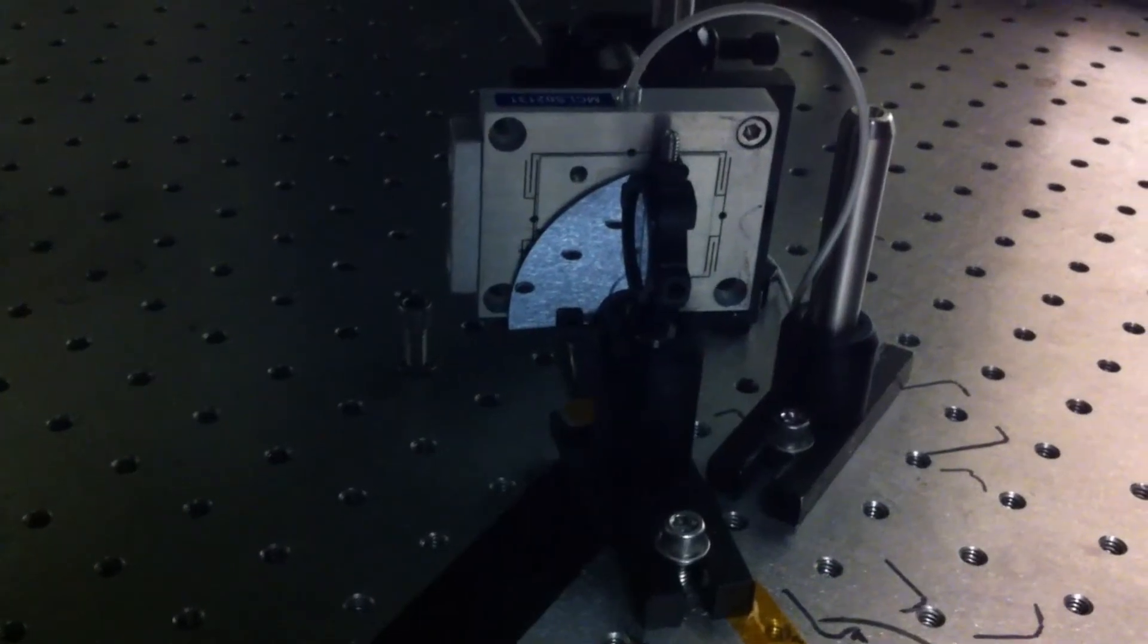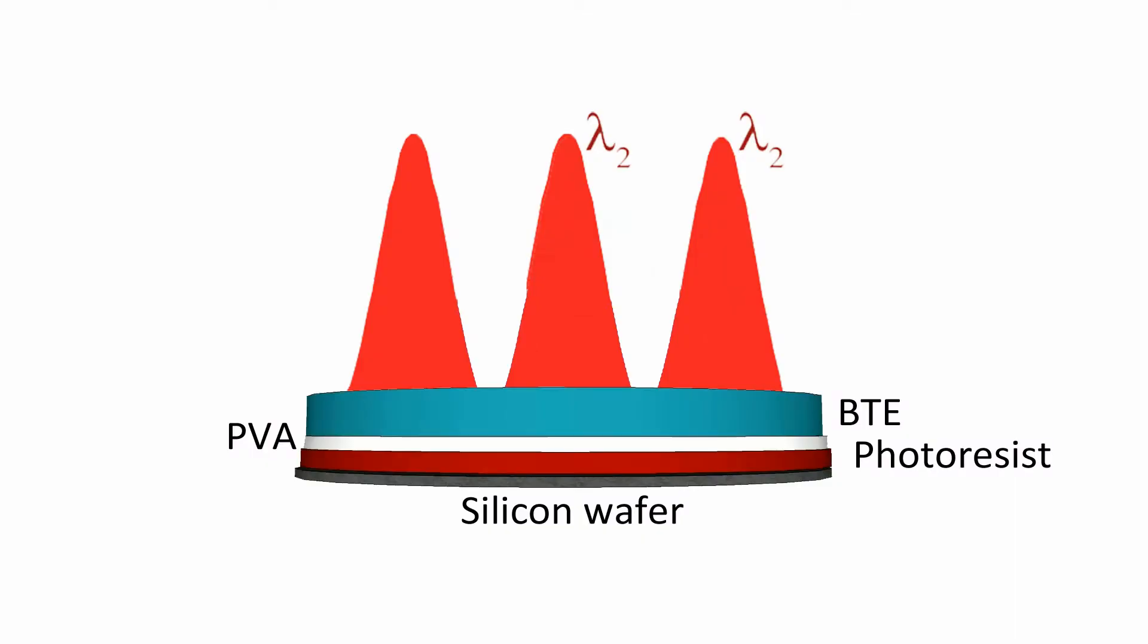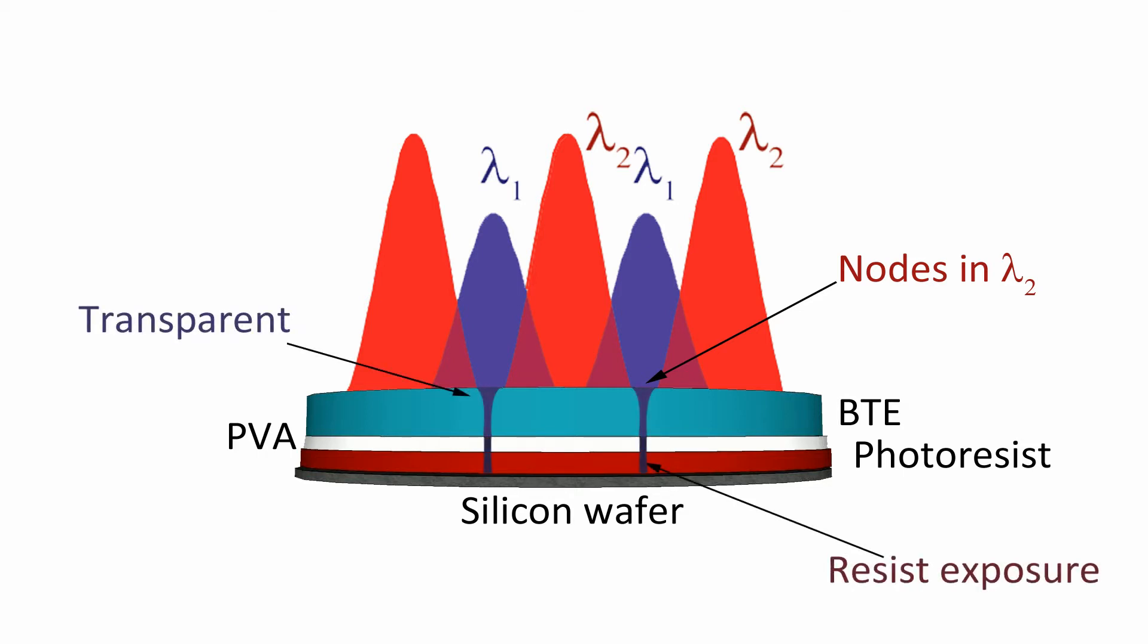The nodes in the red laser beam can be created by a Lloyd mirror setup that generates a standing wave of the red on the BTE surface. Next, we create a standing wave of the UV so that its peaks are on top of the red nodes. This allows the UV to penetrate through the photochromic layer and expose the resist.